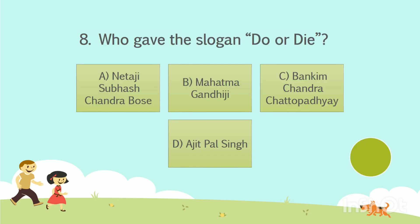Question No. 8. Who gave the slogan 'Do or Die'? Option A: Netaji Subhash Chandra Bose. Option B: Mahatma Gandhiji. Option C: Bankim Chandra Chattopadhyay. Option D: Ajit Pal Singh. Your time starts now. The answer is Option B, Mahatma Gandhiji.